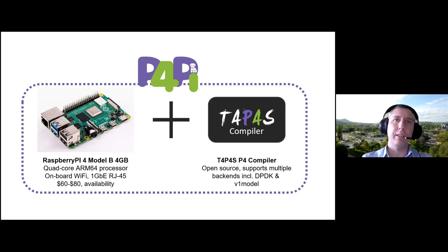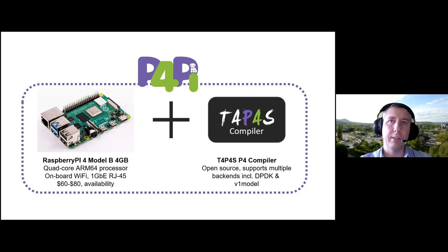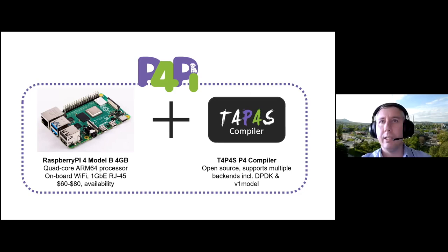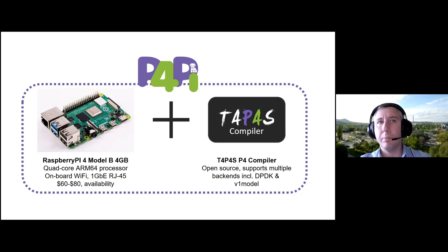Considering all these aspects, we propose a new platform called PAPI, which combines the open hardware of Raspberry Pi and the open source P4 compiler Tapas. We decided to use the latest Raspberry Pi model since it is equipped with a quite strong quad-core processor, onboard Wi-Fi connectivity, and a one gigabit Ethernet port. It is widely available with a friendly price tag. Tapas is a multi-target P4 transpiler designed to provide high packet processing performance, with support for multiple software backends including DPDK. Currently it uses the v1 model architecture but has partial support for PSA as well.